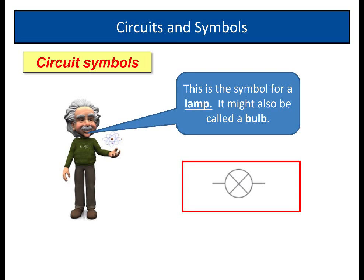This is the symbol for a lamp. You might call it a bulb. Either, it doesn't matter. This is the symbol, no matter which way you call it. So it's a circle with a cross in the middle. That's the symbol for a lamp or bulb.